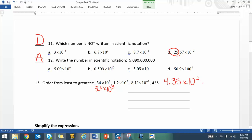So now we rank them. The smallest one is the 8.11 times 10 to the negative third. Followed by 435. Then 34 times 10 to the second. And finally 1.2 times 10 to the seventh.